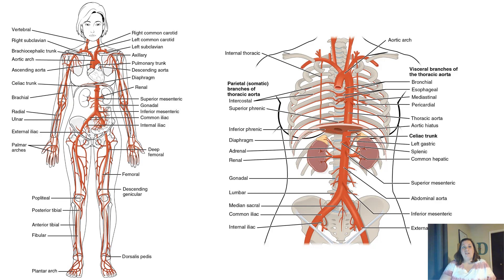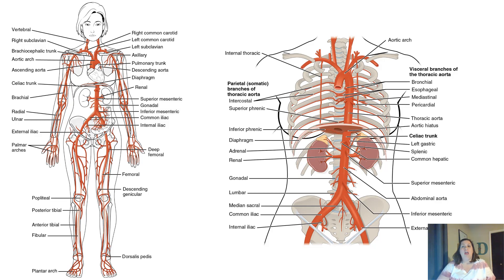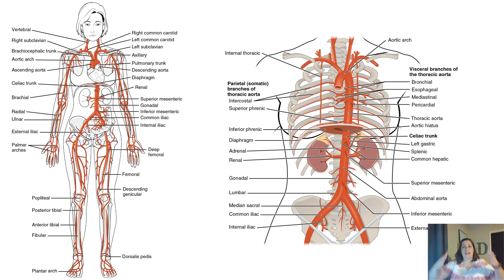Here's a view of the vessels we're talking about, showing the systemic circulation. In the picture, the heart has been removed so you can see how the aorta branches and goes behind the heart. You can see branches going directly to the heart, up to the brain, out to the arms, and then down to the rest of the body and the legs.